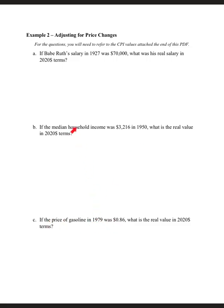What we want to do is see what those real values are in 2020, meaning we want to inflate these values. If Babe Ruth was making $70,000 in 1927, how much would they need to be making in 2020 to have the same purchasing power? The same thing with median household income in 1950 - what would it have to be in 2020 to have that same purchasing power?